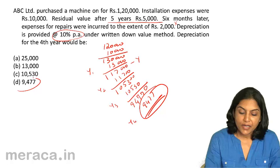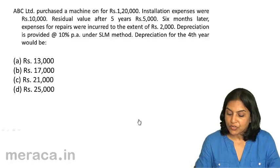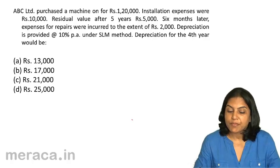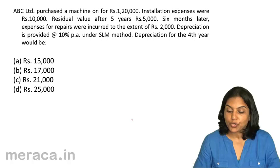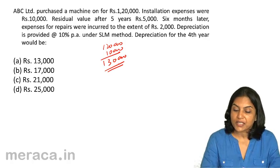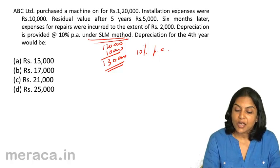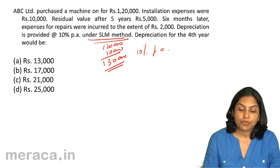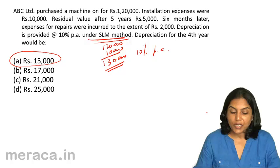The correct answer for the WDV question is Option D. Next, the same machine — ABC Limited purchased for Rs. 1,20,000, installation expenses Rs. 10,000, total cost Rs. 1,30,000 — but now depreciation is provided at 10% per annum under the straight line method. Depreciation would be Rs. 13,000 per year, every year. The correct answer is A, Rs. 13,000, since it is a fixed amount under SLM regardless of the year.